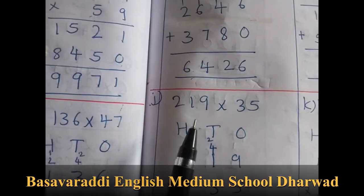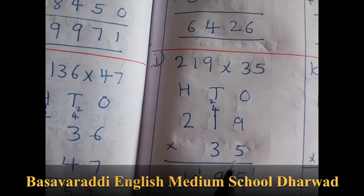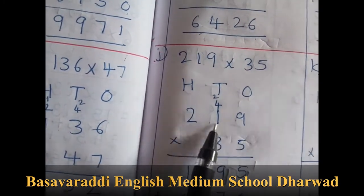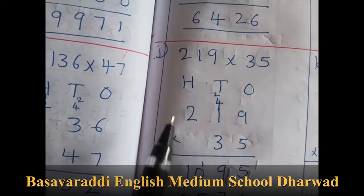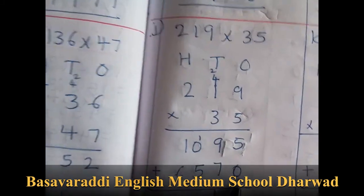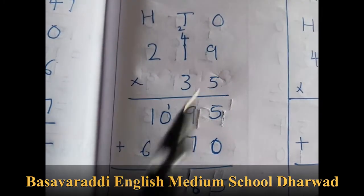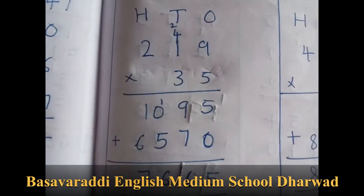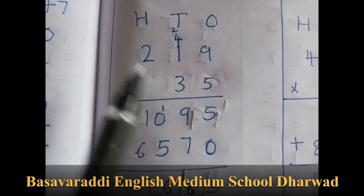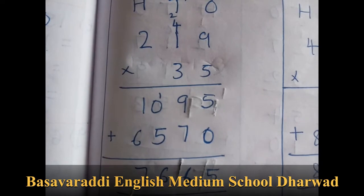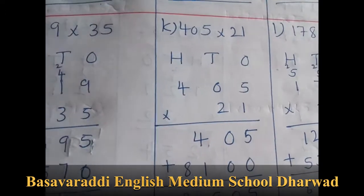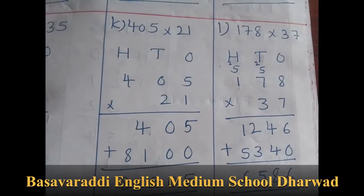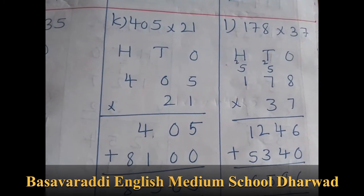Now J2: 219 into 35. So 5 times 9 is 45, 5 times 1 is 5 plus 4 is 9, 5 times 2 is 10, put 0 here. Then 3 times 9 is 27, 2 is carry over, 3 times 1 is 3 plus 2 is 5, 3 times 2 is 6. The answer is 7665. K1 answer is 8505. And L1 is 6586.